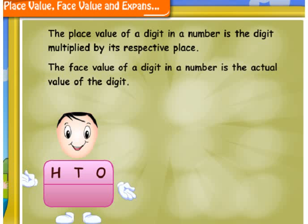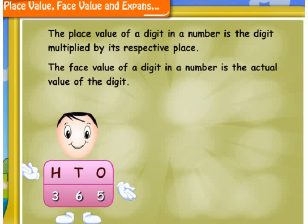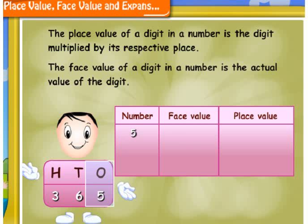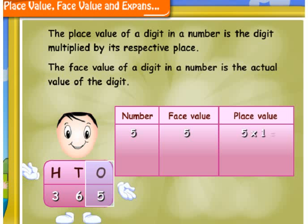Let me take a number, say 365. This is represented on me like this. The digit at ones place is 5. Its face value is 5, and the place value is 5 into 1, that is, 5.